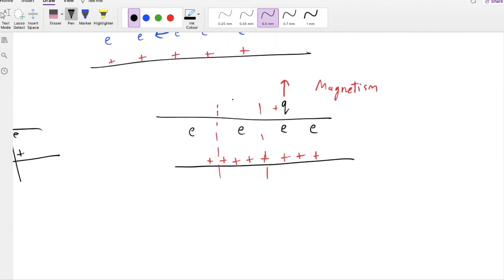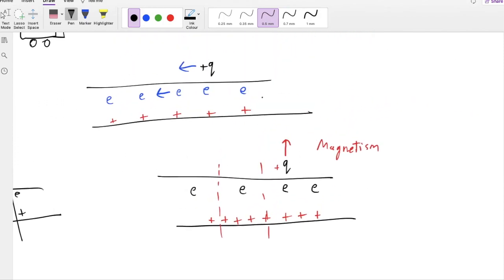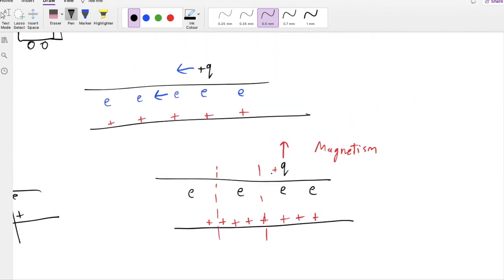But when our charge, when our test charge starts to move, suddenly it feels a repulsion. Because for the test charge, electrons are moving along with it almost. But the positive charges are moving away from it, which means there would be length contraction, which means there would be a repulsion, a repulsive force. Which we just term as magnetic force.